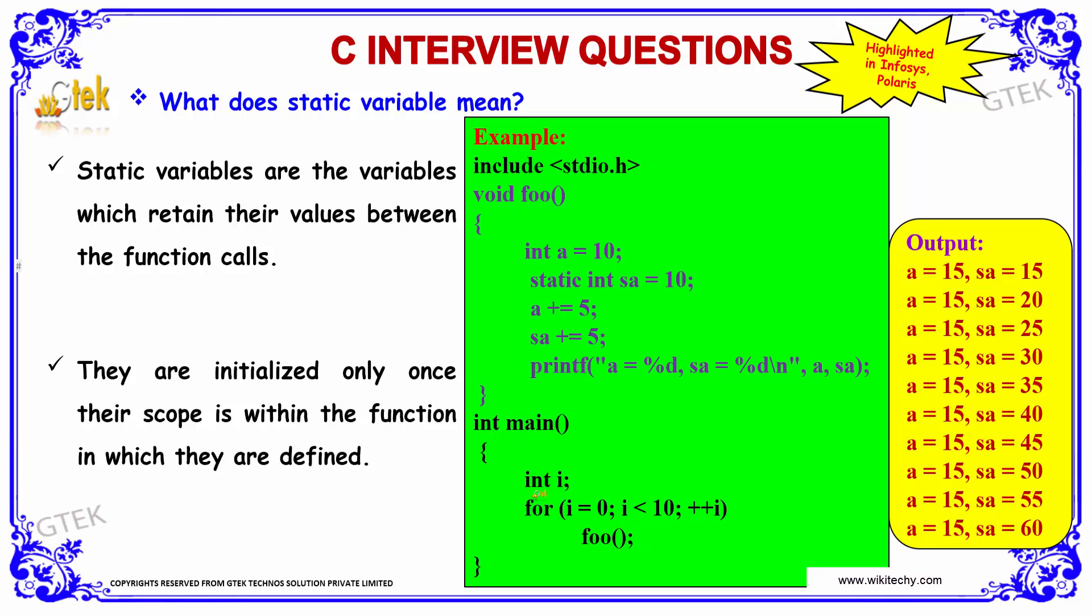We have an example depiction here for the static variable. Here we have a function foo. Inside that, we have the integer a equal to 10 defined, and static int sa is the static variable that is also 10.